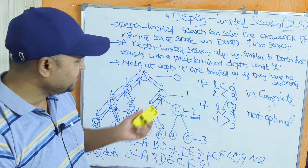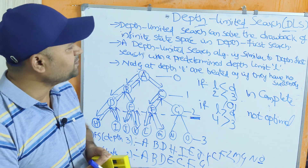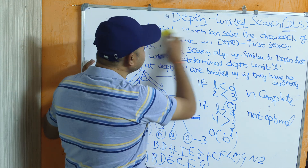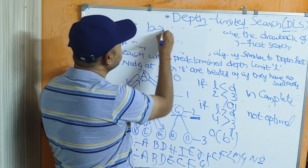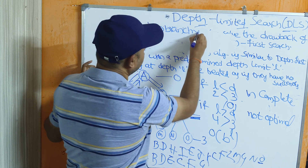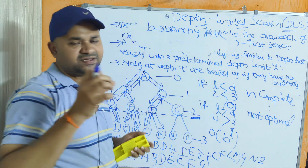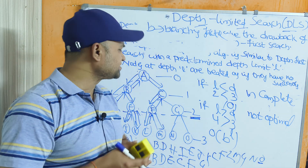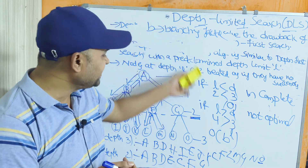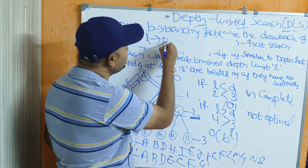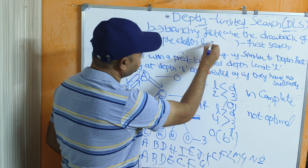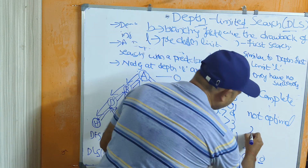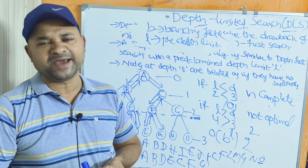The time complexity of Depth Limited Search is O(B^L), where B is the branching factor and L is the predetermined depth limit. The branching factor means the number of children a parent node has — in this tree, every node has 2 children, so B equals 2. With a depth limit of 2, the maximum comparisons required are 2^2 = 4.